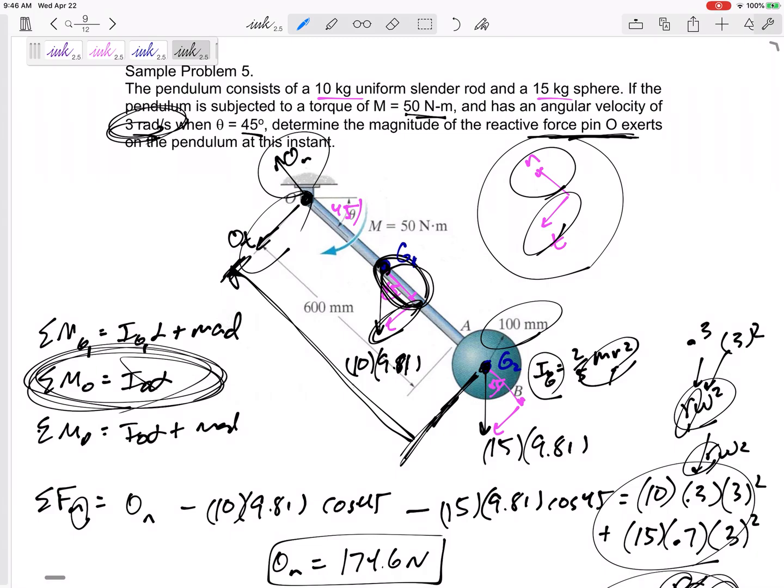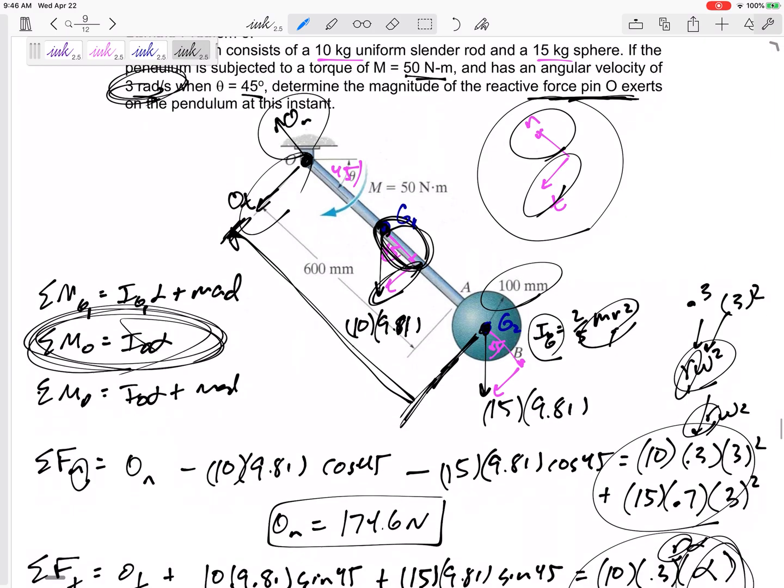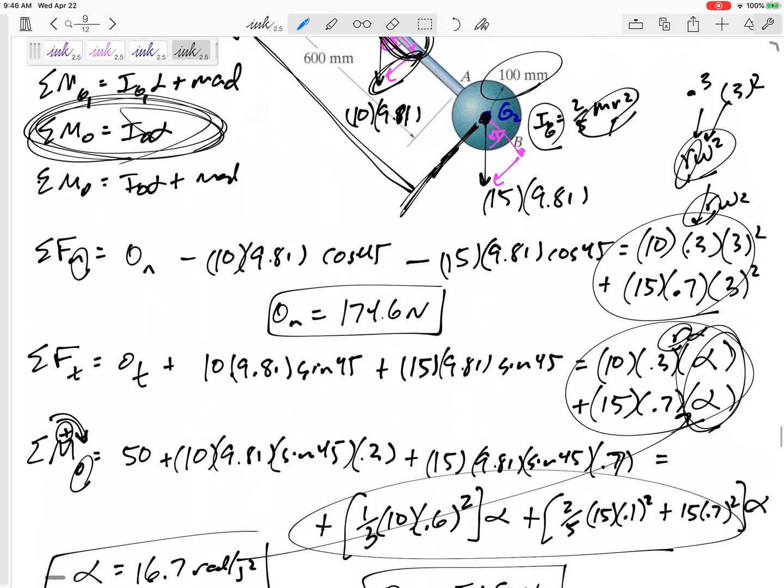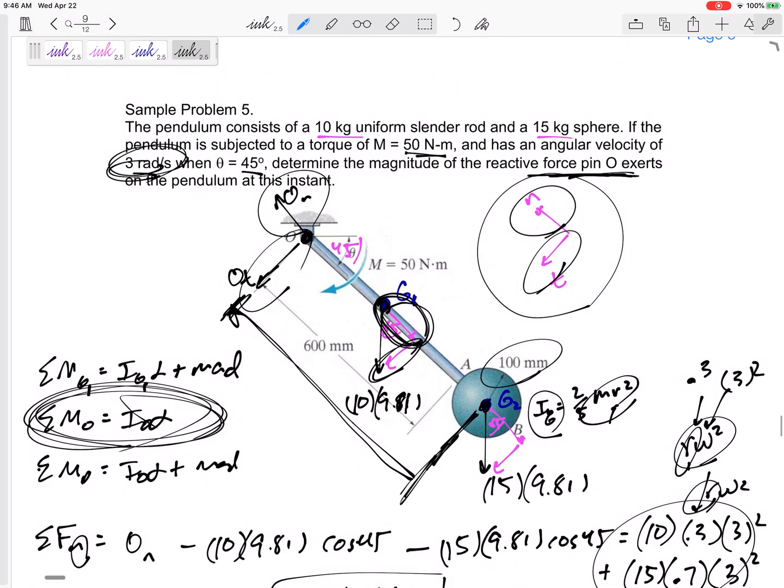But if you sum the moments about a different point that has a different center of gravity away from that, then you have to worry about that MAD term. And that MAD is almost like it's a moment. That MA is acting a distance D away from your point P that you are summing your moments about, that you would have to almost treat it like a moment on the right-hand side of your equation in addition to the I alpha.